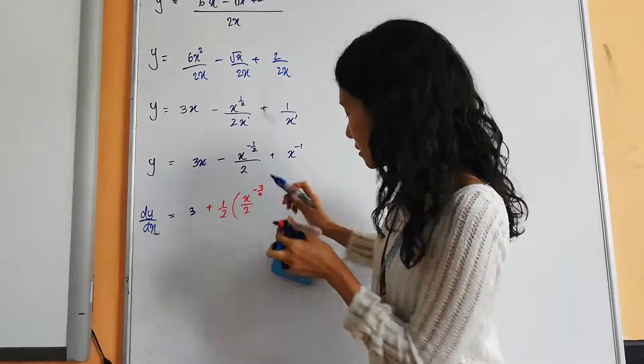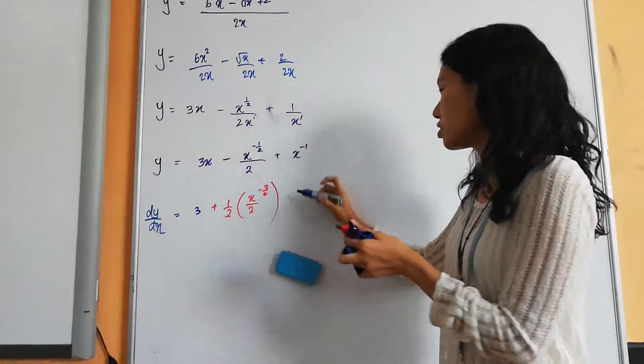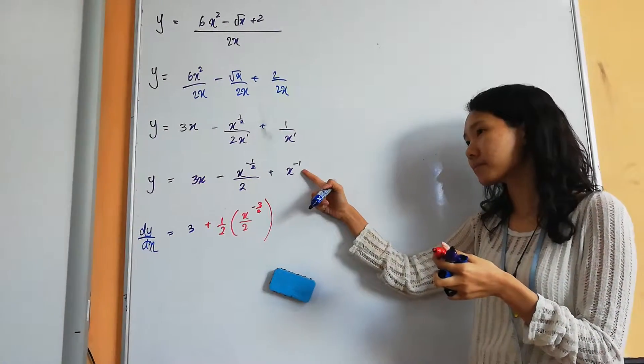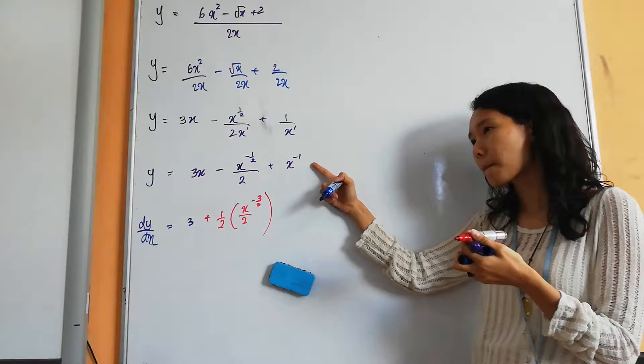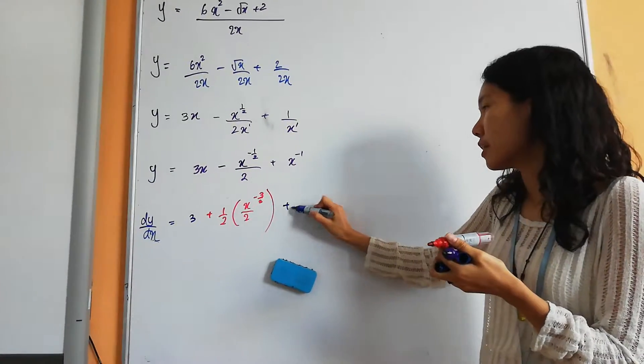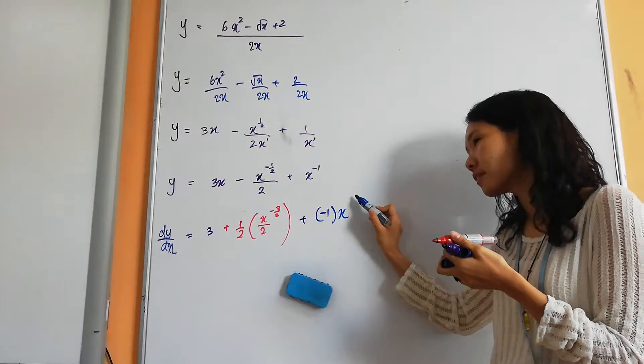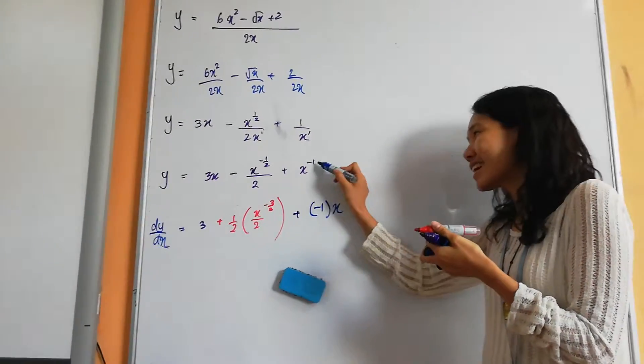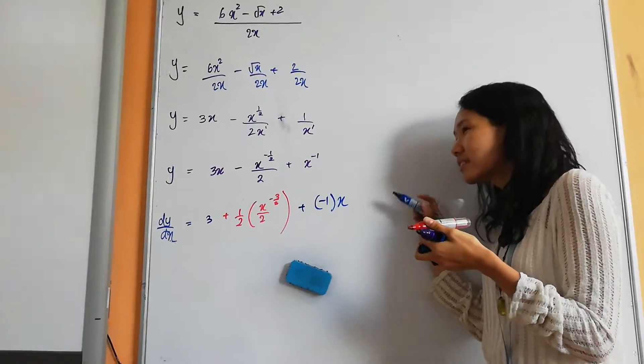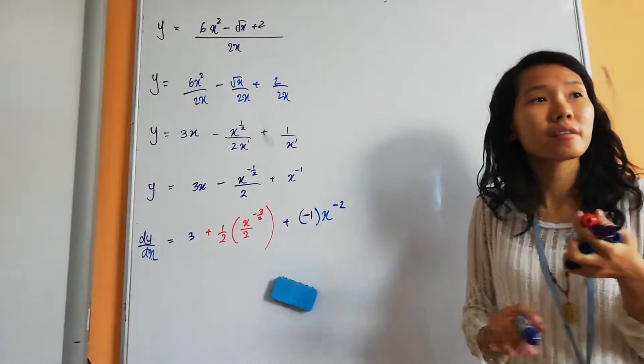1 yen. Try the last one. Differentiate this. Who's the power? Negative 1. Yeah. So, negative 1. X to the power of? Negative 1. Yeah. So, negative 1. Negative 1 minus 1. Negative 1. Thank you. Everybody okay? Yeah. Right.